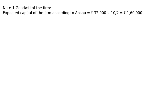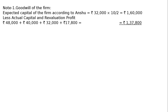Hence, expected capital according to Anshu: Anshu has contributed a capital of Rs. 32,000 multiplied by the reverse of her share, that is 10 by 2, which is equal to Rs. 1,60,000. Less actual capital and revaluation profit including reserves. Capital of Deepika is Rs. 48,000, Rajshri is Rs. 48,000, and Anshu is Rs. 32,000.